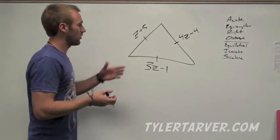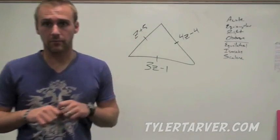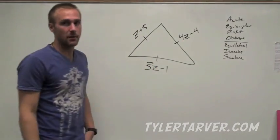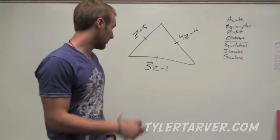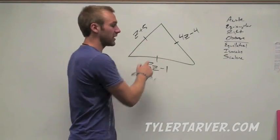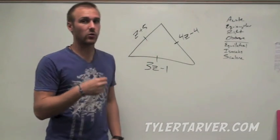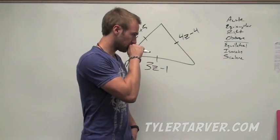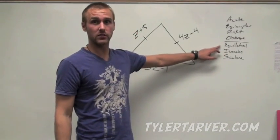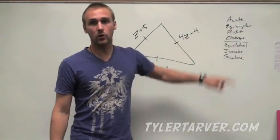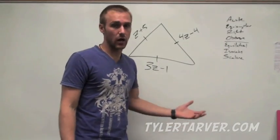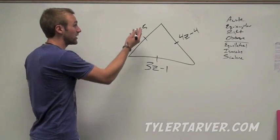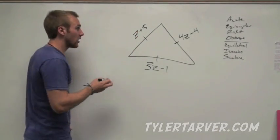Example: let's find out what these side measurements are. We know this one is z plus five, this one is four z minus four, and this is three z minus one. The little marks on the sides mean they are the same length, so all the sides are equal in this triangle. This is an equilateral triangle, and also equiangular because all the sides are equal, meaning all the angles opposite are equal. So we can just set any two sides equal to each other to solve for z.